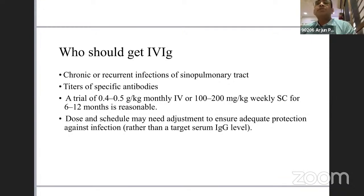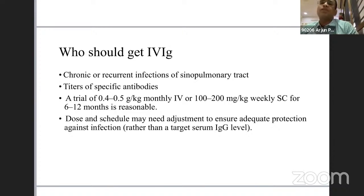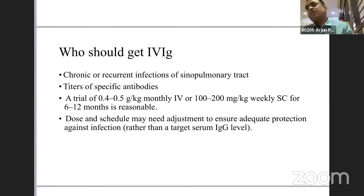Some patients with functional hypogammaglobulinemia have no titers of specific antibodies against vaccines. When clinical need for IV immunoglobulin replacement is demonstrated, we do a trial of 0.4 to 0.5 grams per kilogram monthly IV. Subcutaneous use is becoming increasingly attractive — 100 to 200 milligrams per kilogram weekly subcutaneously for 6 to 12 months. Dose and schedule need adjustment according to clinical response and trough immunoglobulin levels, but do not aim for a target level — be guided by clinical response.